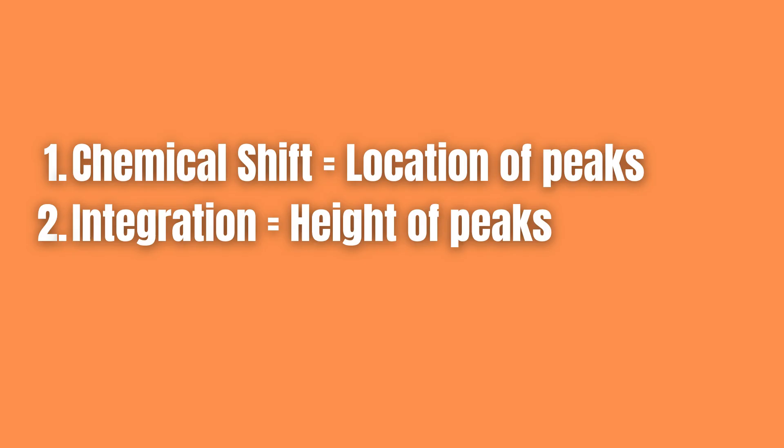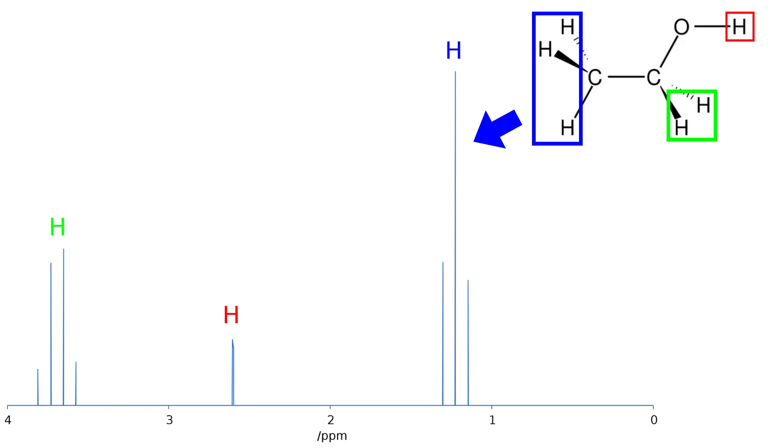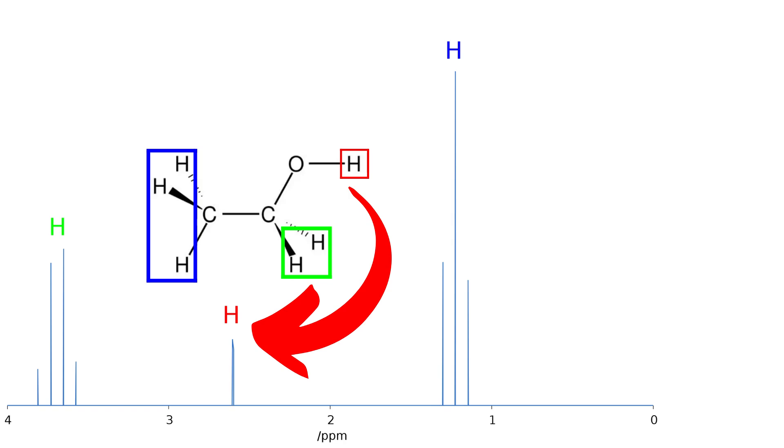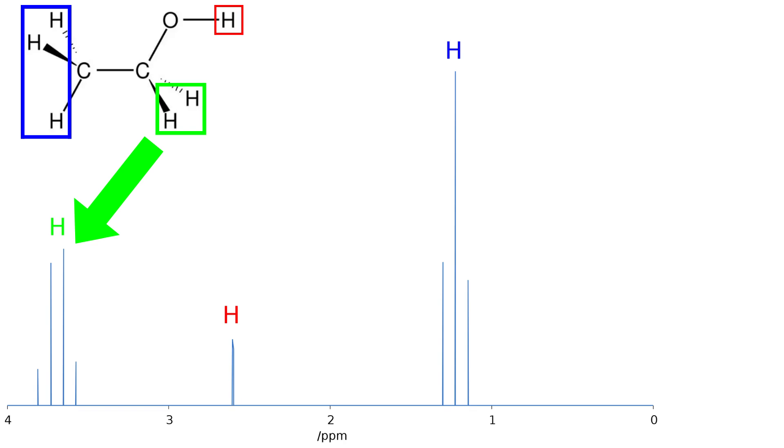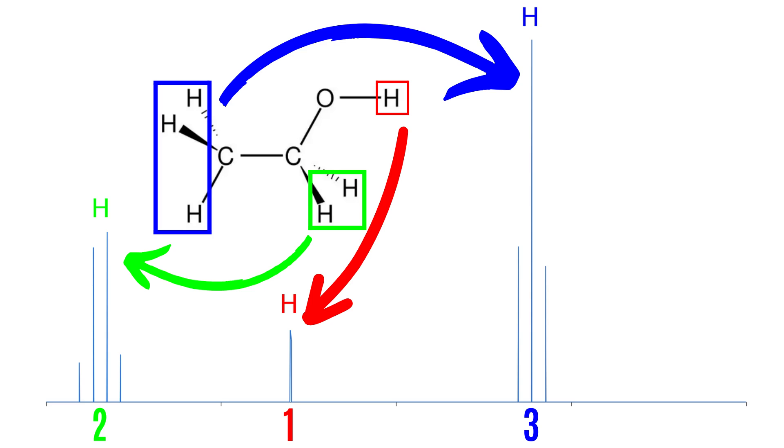Second is integration, which has to do with the height of the peak in the spectrum. The integration is proportional to the number of protons that share an identical chemical environment, meaning that protons that share the exact same distance to electronegative elements will share the location on the spectrum and their peaks will be added to each other.